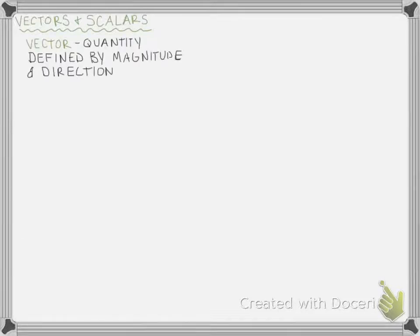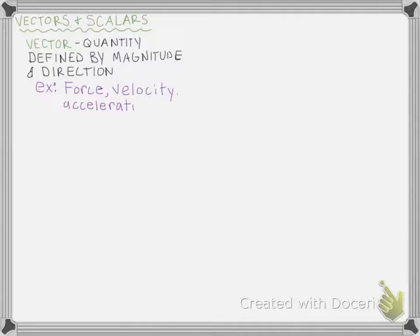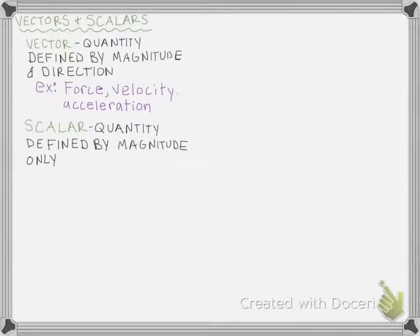A vector is any quantity that is defined by both a magnitude and a direction. It needs a magnitude — how big it is — and a direction — in which direction it acts. Some examples of vectors are force, velocity, and acceleration. These are all things that need to be defined by both a magnitude and a direction. On the other hand, a scalar is any quantity defined by magnitude only, so it does not need a direction.